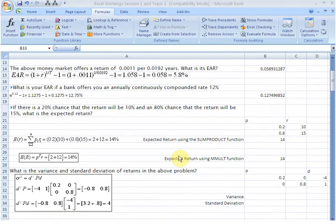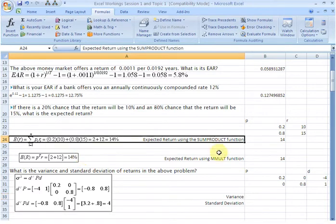Hello everyone. In this video we are continuing the same worksheet from before. We had closed the last video at this problem where we had found out the expected return by using this data here. The manual solution is here - 14% was our expected rate of return, and we had also found the expected return by using the SUMPRODUCT